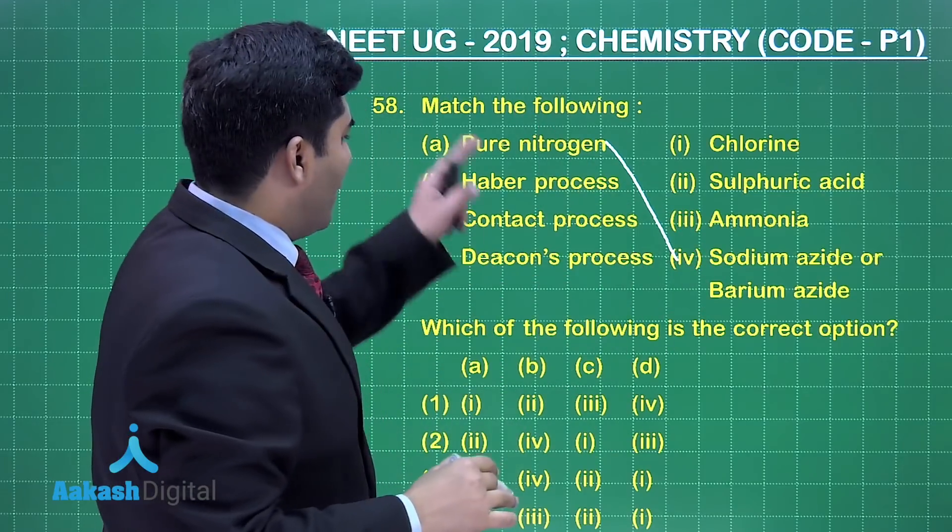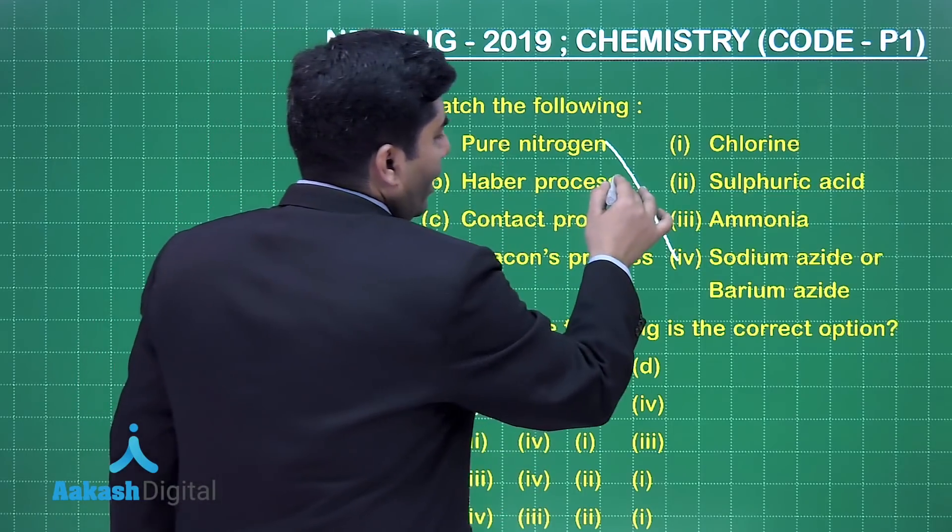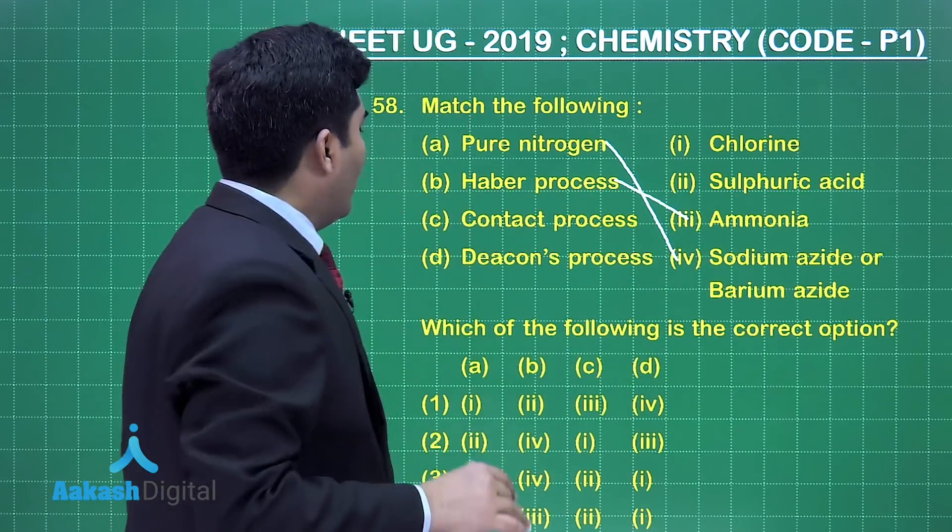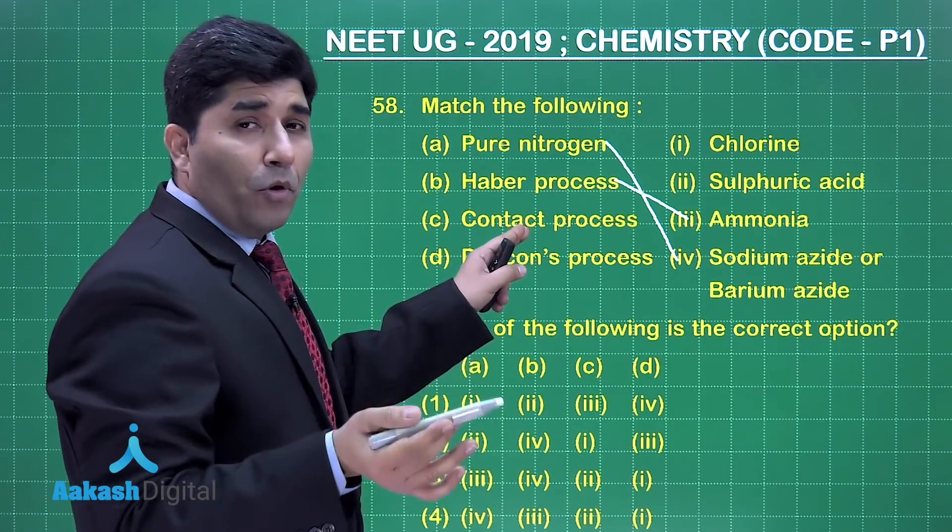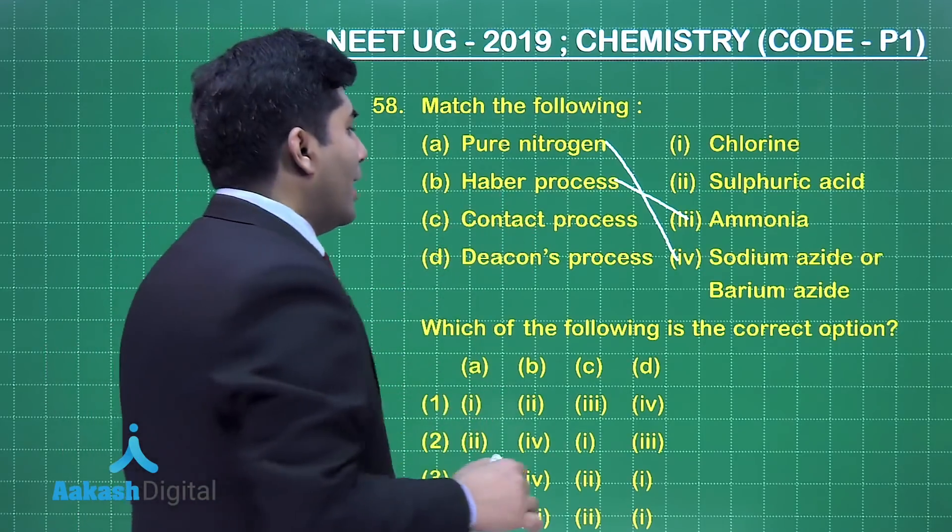Haber's process is used to prepare ammonia, so it matches with the third option. Contact process is used to prepare sulfuric acid industrially, so it matches with the second option.